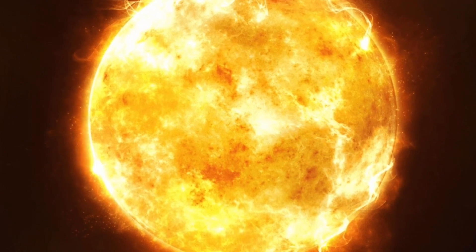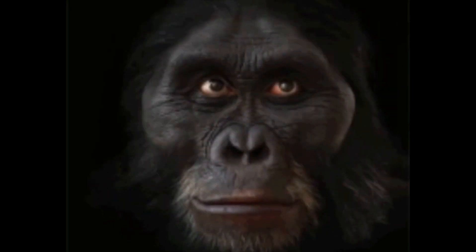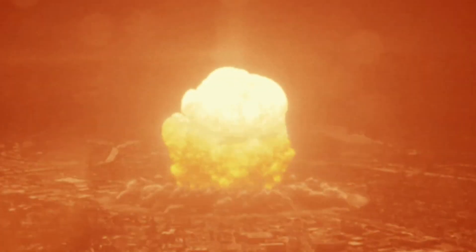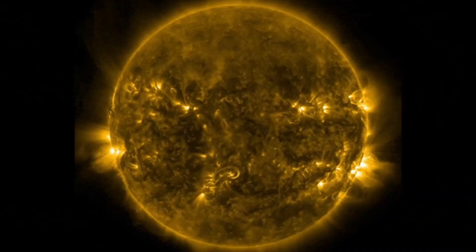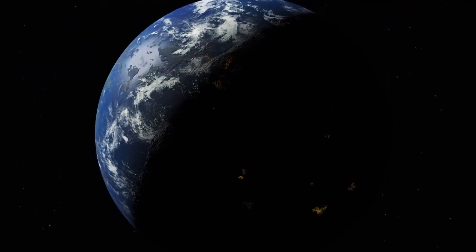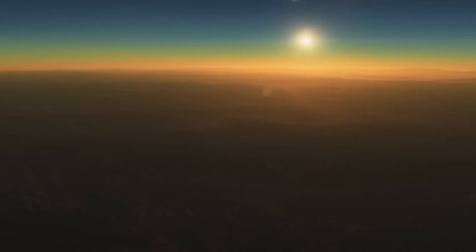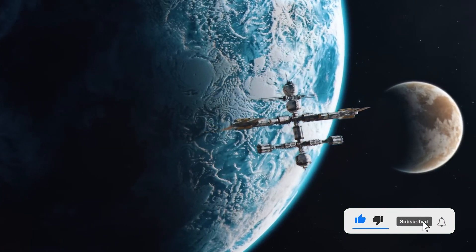These stars, cooler than the Sun, boast longer lifespans, 40 to 70 billion years. In contrast, Class G stars, including our Sun, have shorter lifespans, subjecting their planets to the instability of alternating ice ages and global warming.